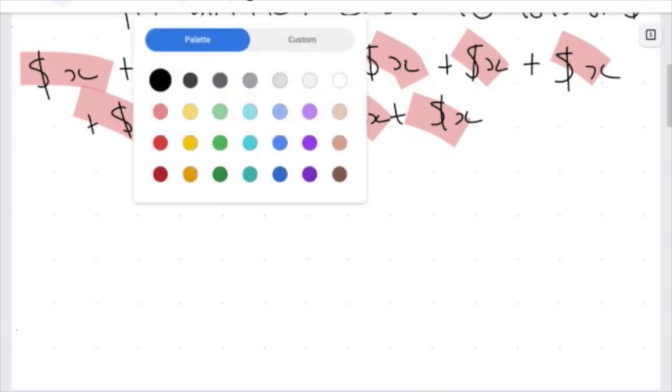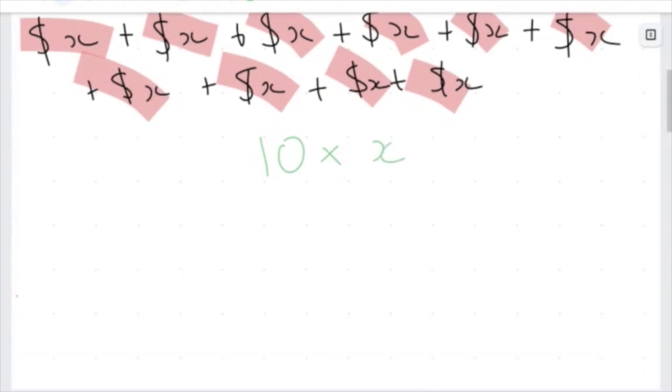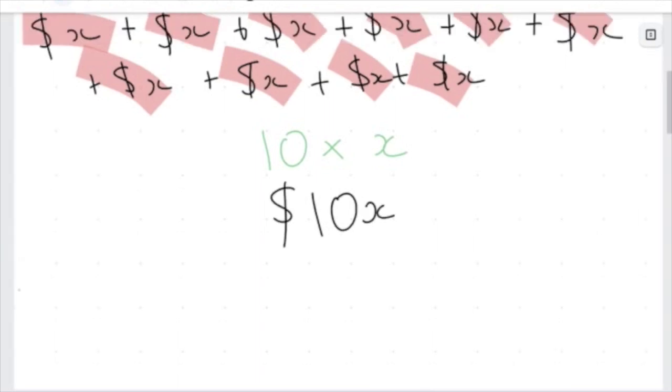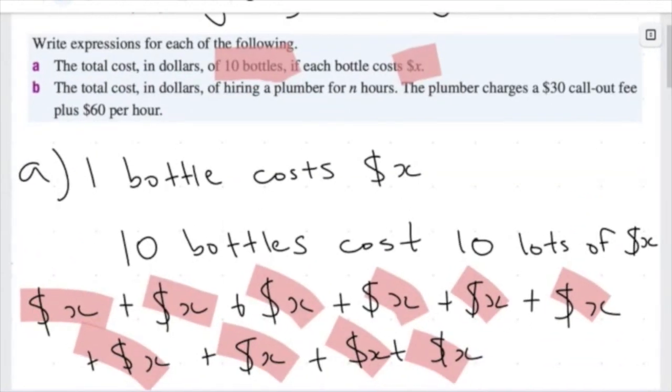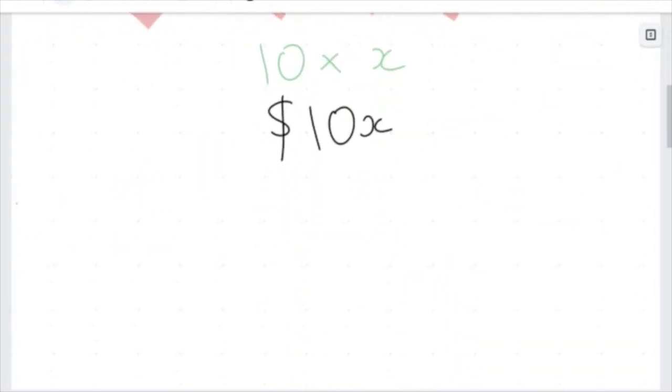And we can rewrite this in a simpler way because we learned in primary school that instead of just writing the same number and adding it, we can multiply this. So we have 10 lots of X dollars. Now with algebra, we learned that a short form way of writing this is going to be 10X. So to express this thing, the cost of 10 bottles with each bottle costing X dollars, I can just write this as 10 lots of X dollars.